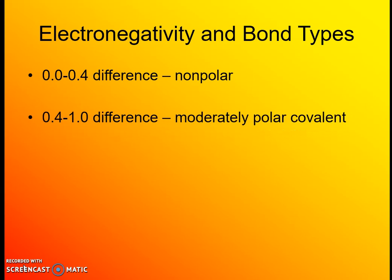Next is a moderately polar covalent bond, when you have a difference of 0.4 to 1.0 in electronegativity. You're going to have unequal sharing — not a really strong unequal sharing — but the atom with greater electronegativity pulls electrons a little closer, resulting in partial negative and positive charges on those two atoms.